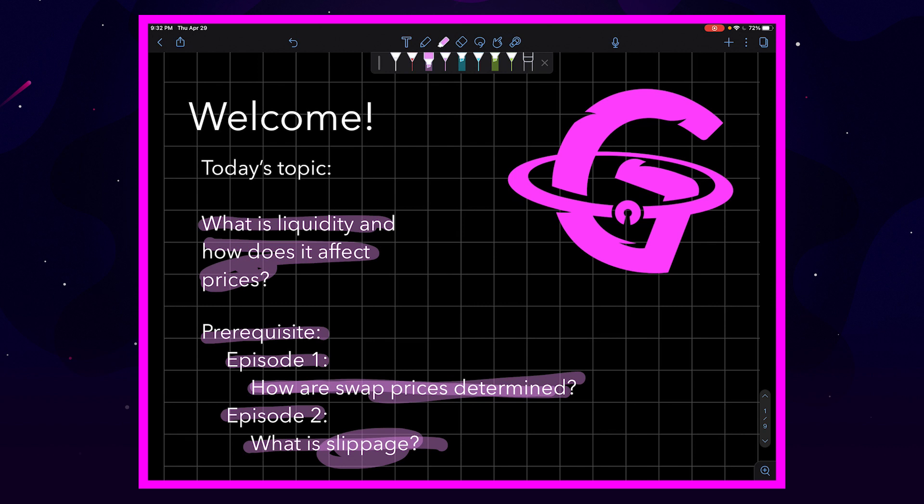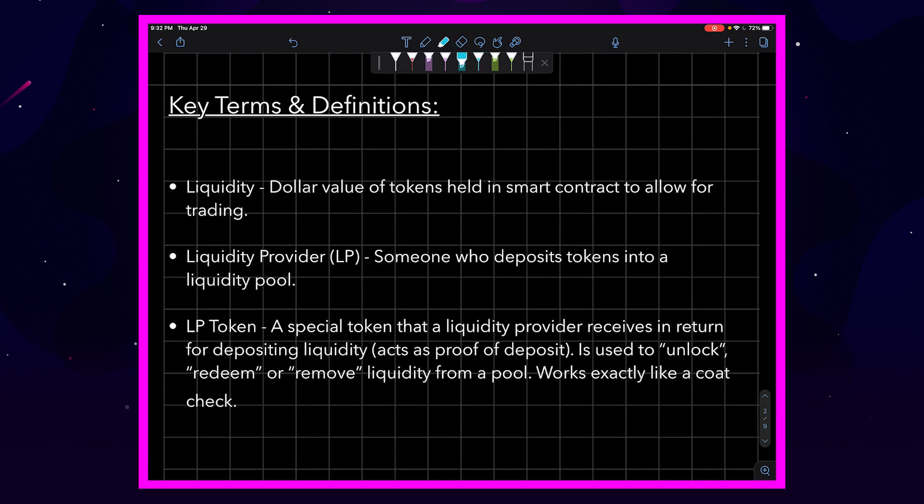Our key terms and definitions for today are liquidity, of course. Now, liquidity is the dollar value of tokens held in the smart contract to allow for trading.